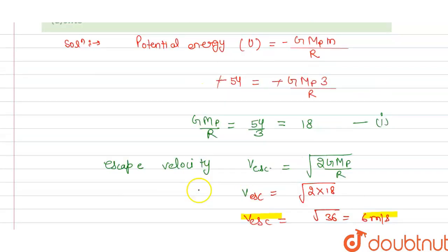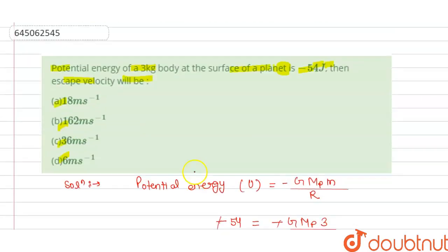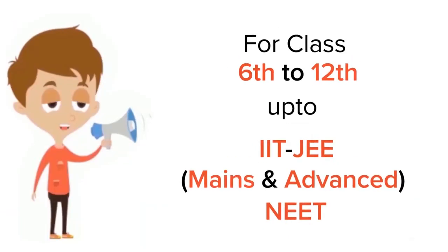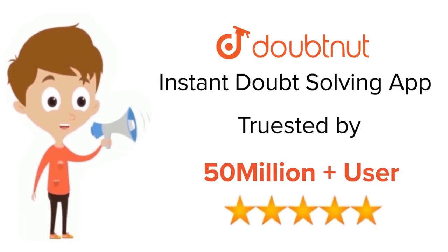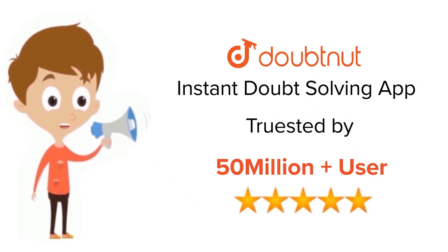Now we check which option is correct. Our option D is correct. Thank you. For class 6 to 12, IIT JEE and NEET level, trusted by more than 5 crore students, download DoubtNet today.